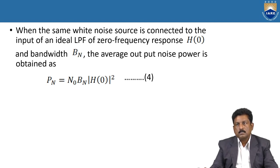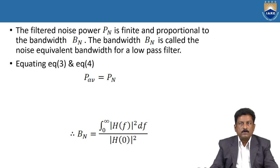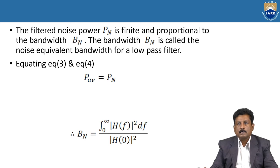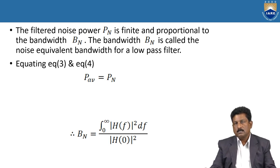The output noise power is proportional to bandwidth B_N. The bandwidth B_N is called the noise equivalent bandwidth for a low-pass filter. Equating the two expressions we get p_avg = p_n, and from this we calculate: B_N = [integral from 0 to ∞ of |H(f)|² df] / |H(0)|². This is the noise equivalent bandwidth formula.